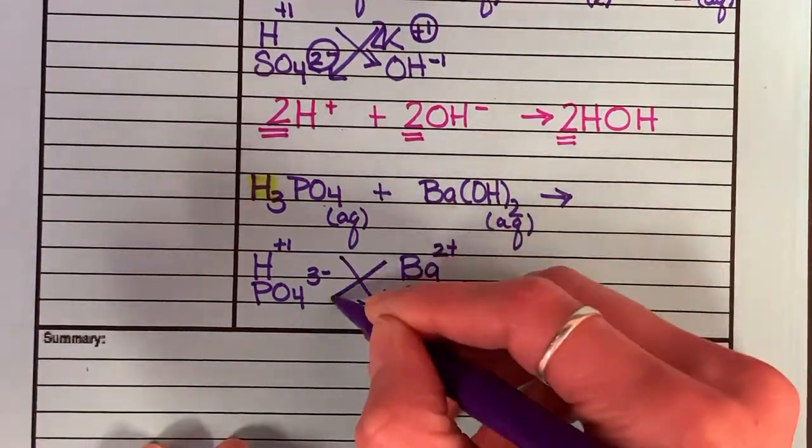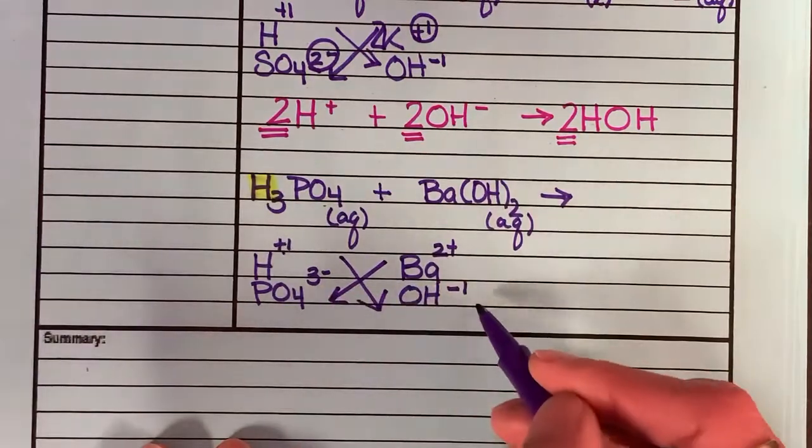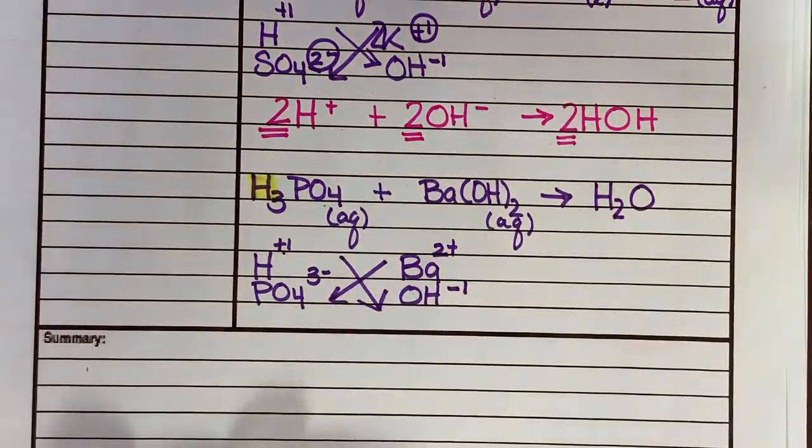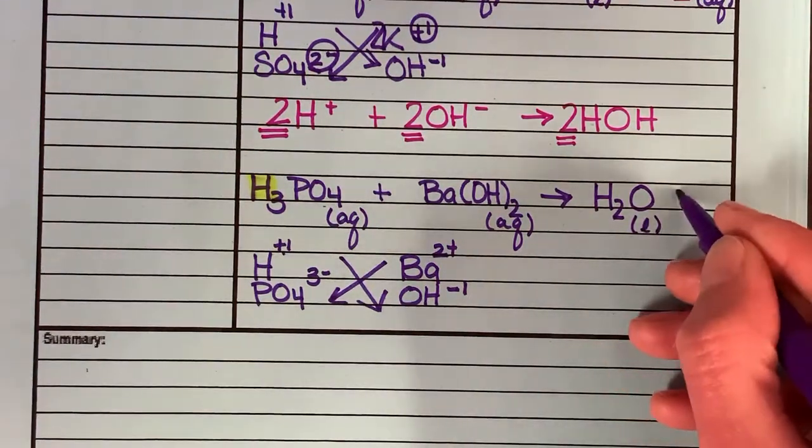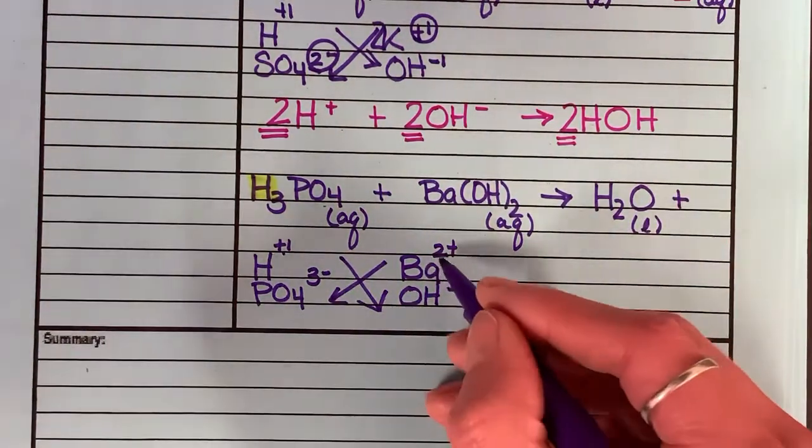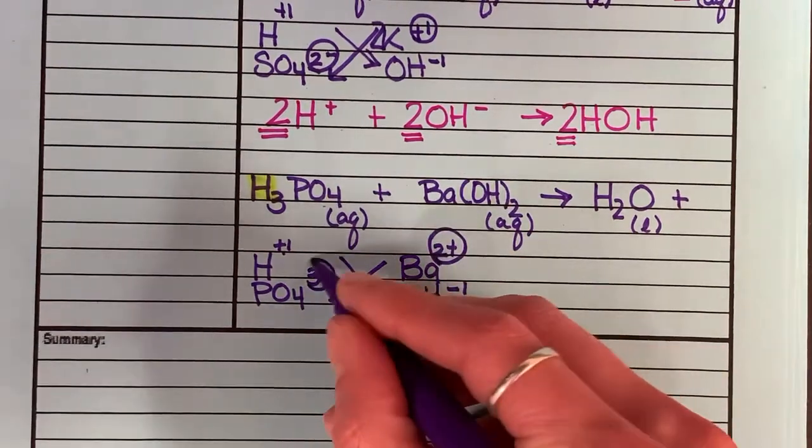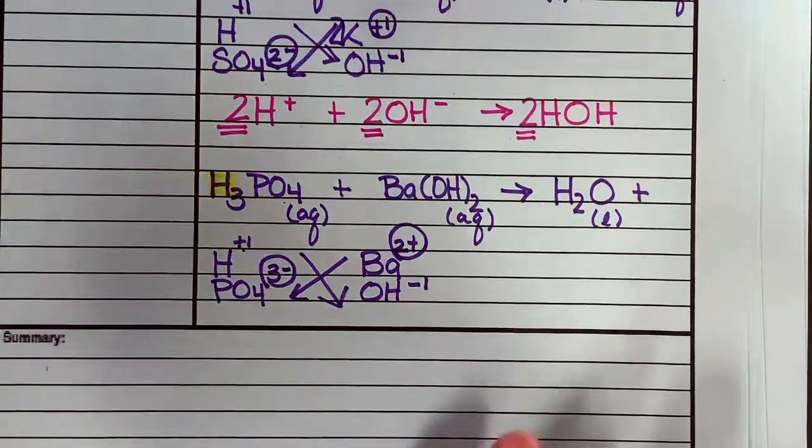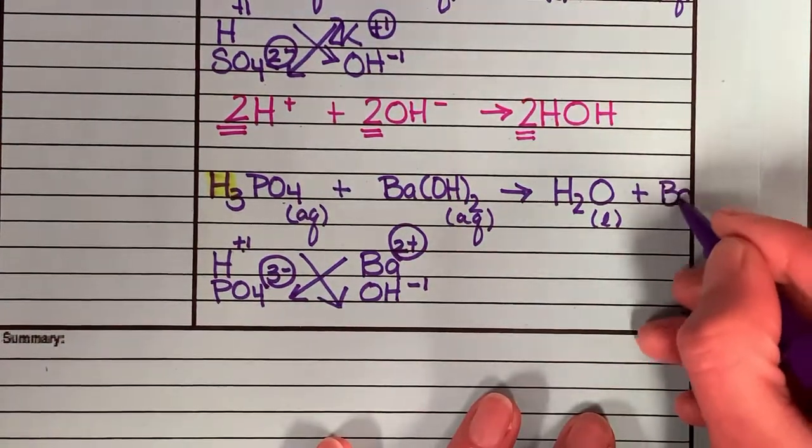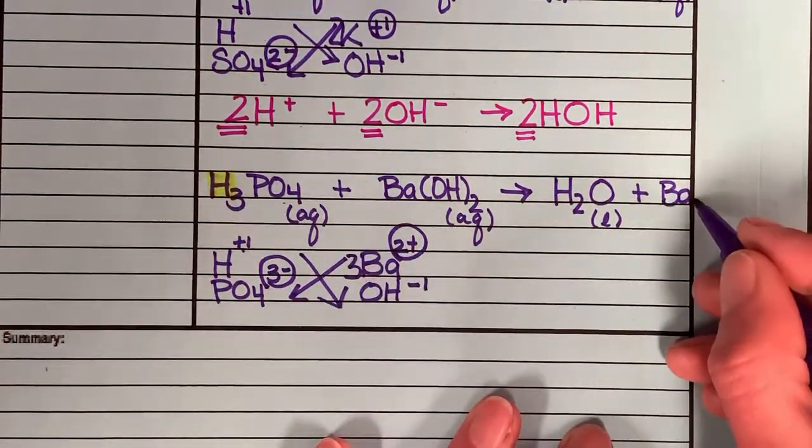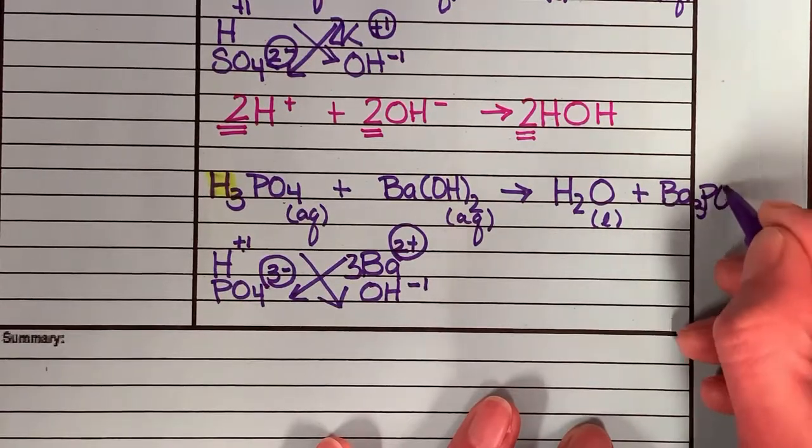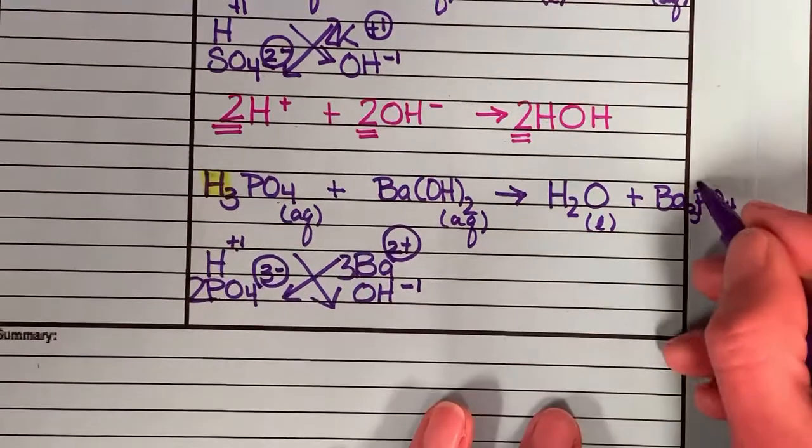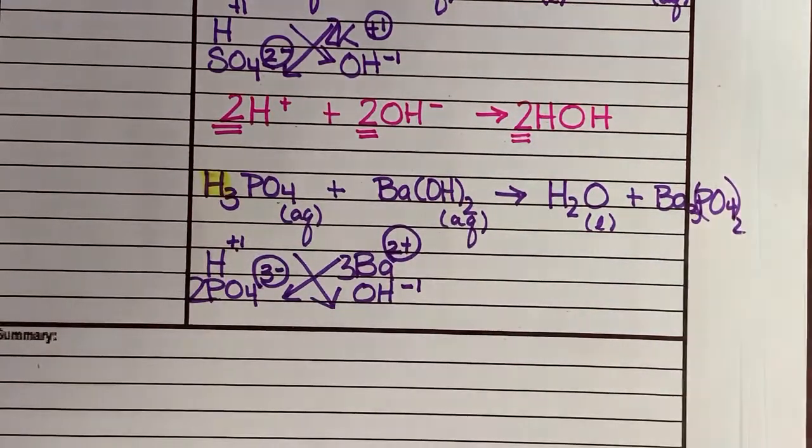They switch partners. H and OH come together to make water always. Which I know is a liquid. Plus two minus three. I need to switch charges. Ba3(PO4)2.